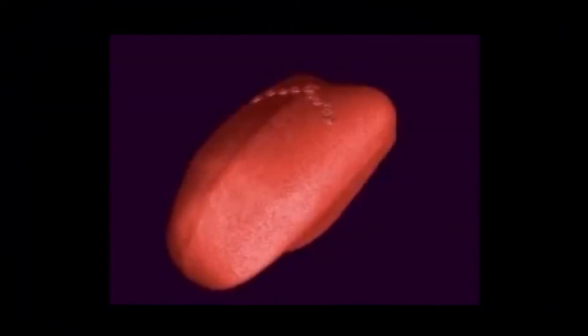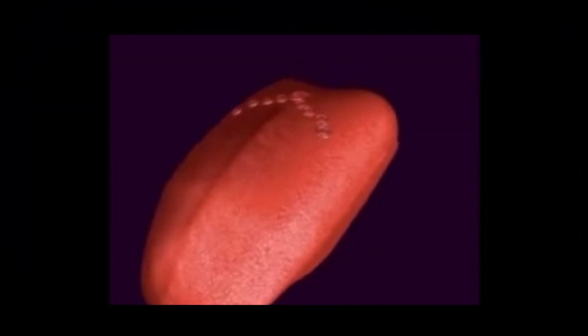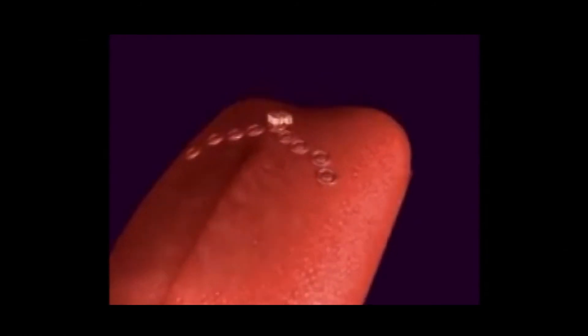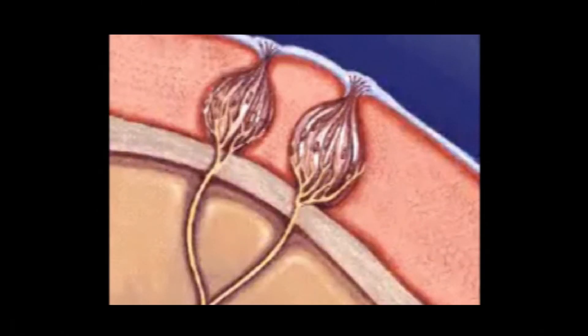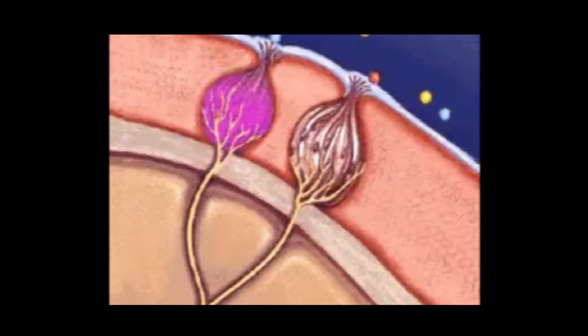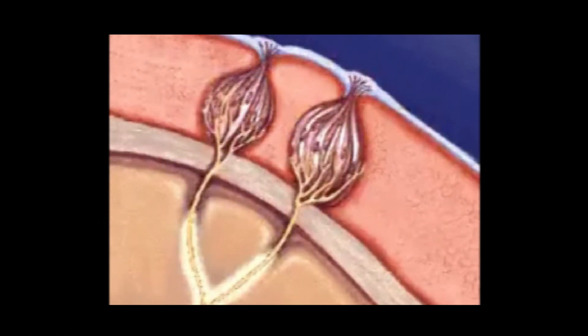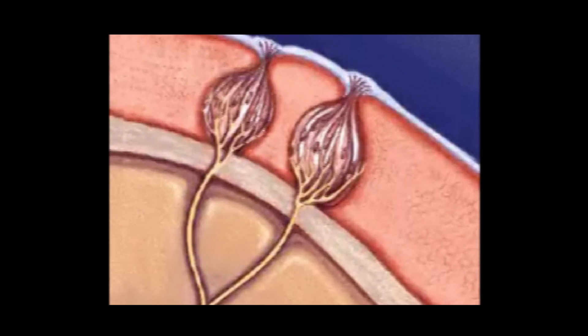The taste buds sensitive to bitter taste are at the back of the tongue. Those for sour taste are on the lateral surface. Those mediating salt are at the anterior part of the dorsum near the tip. The taste buds sensitive to sweet are near the tip. The taste buds in the palate respond to sour and bitter taste but have some sensitivity to sweet and salt.